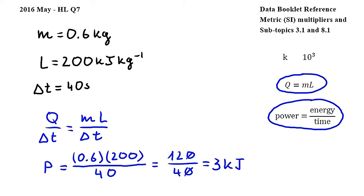Finally, using this conversion from the metric multiplier section of the data booklet, I see that k stands for 10 to the power of 3, so 3 kilojoules is equal to 3000 joules, which means that the answer to this question is B.